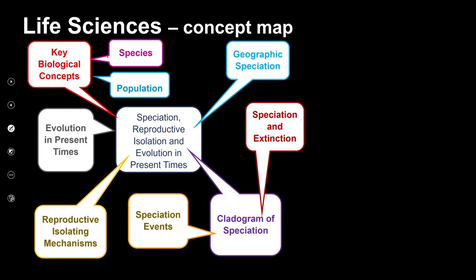Let's have a look at the concepts we're going to cover in this topic. We'll look at speciation, reproductive isolation, and evolution in present times. Specifically, we're going to look at biological concepts and very important terminology, because terminology is important — especially the difference between species and population. Then we're going to look at geographic speciation and the mechanism that involves new species forming.